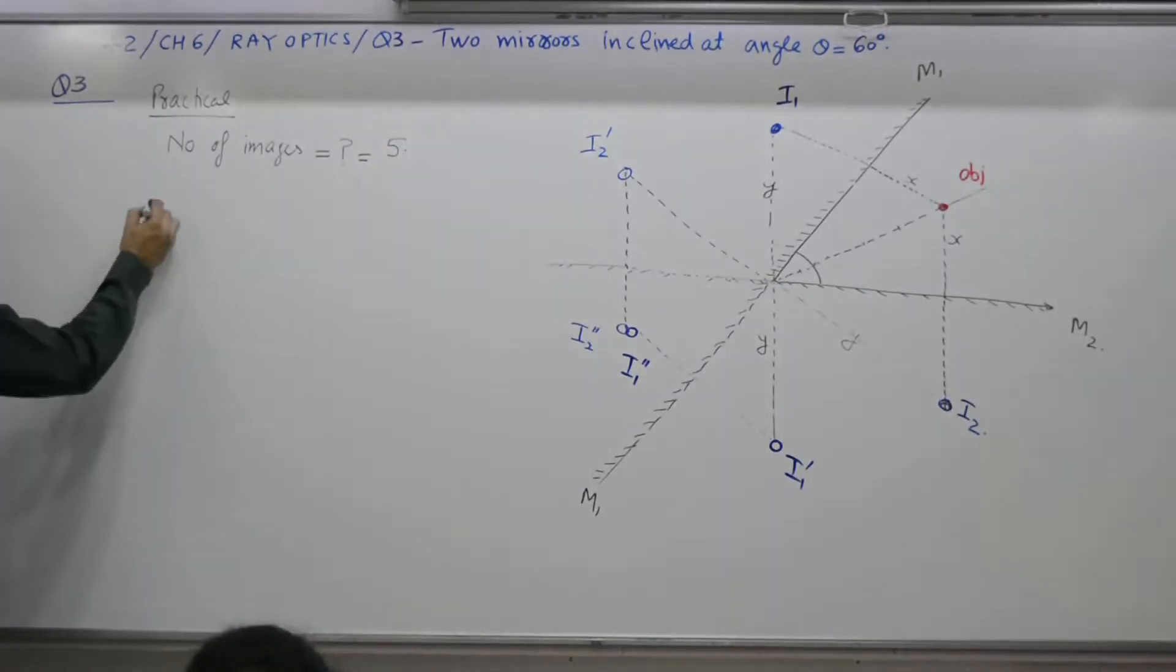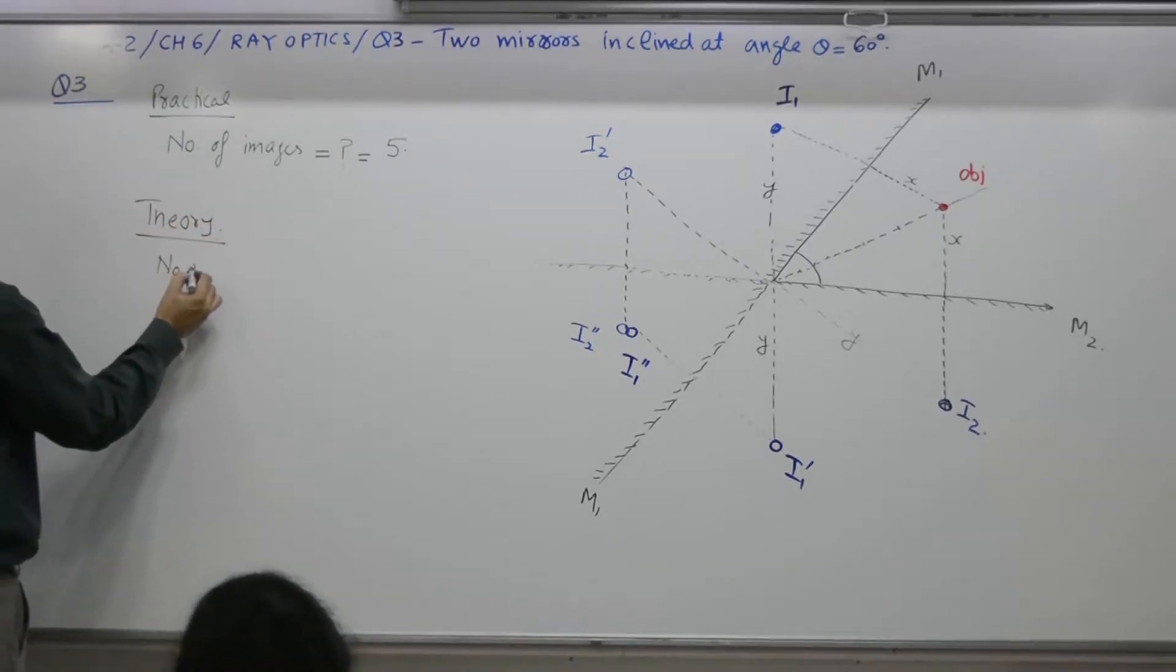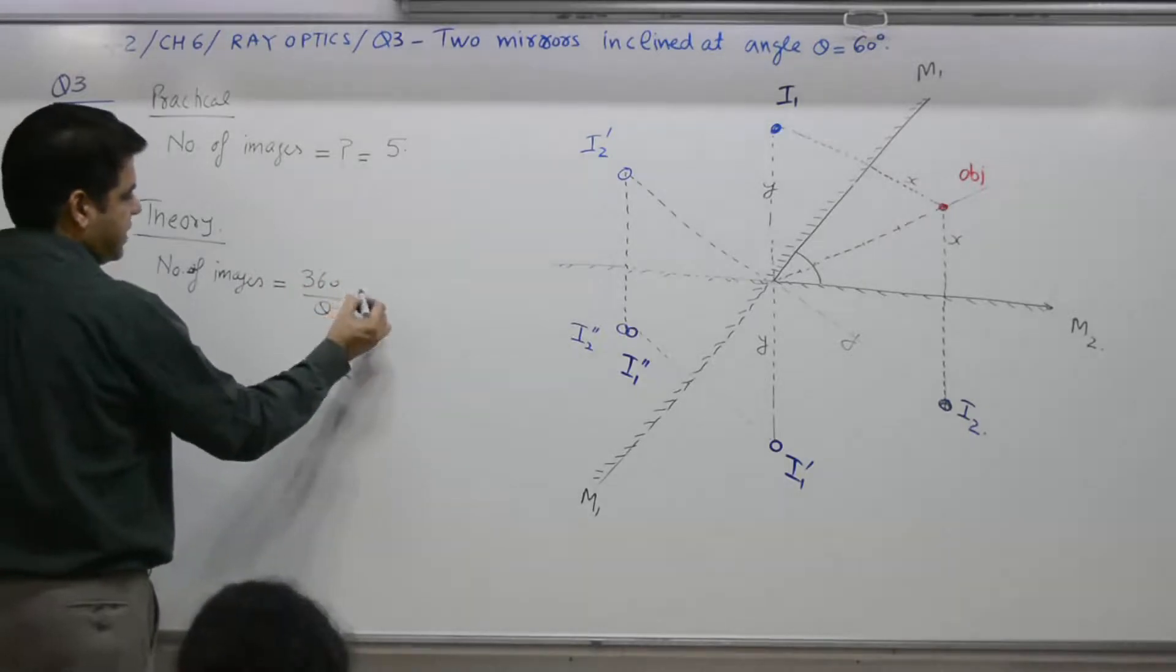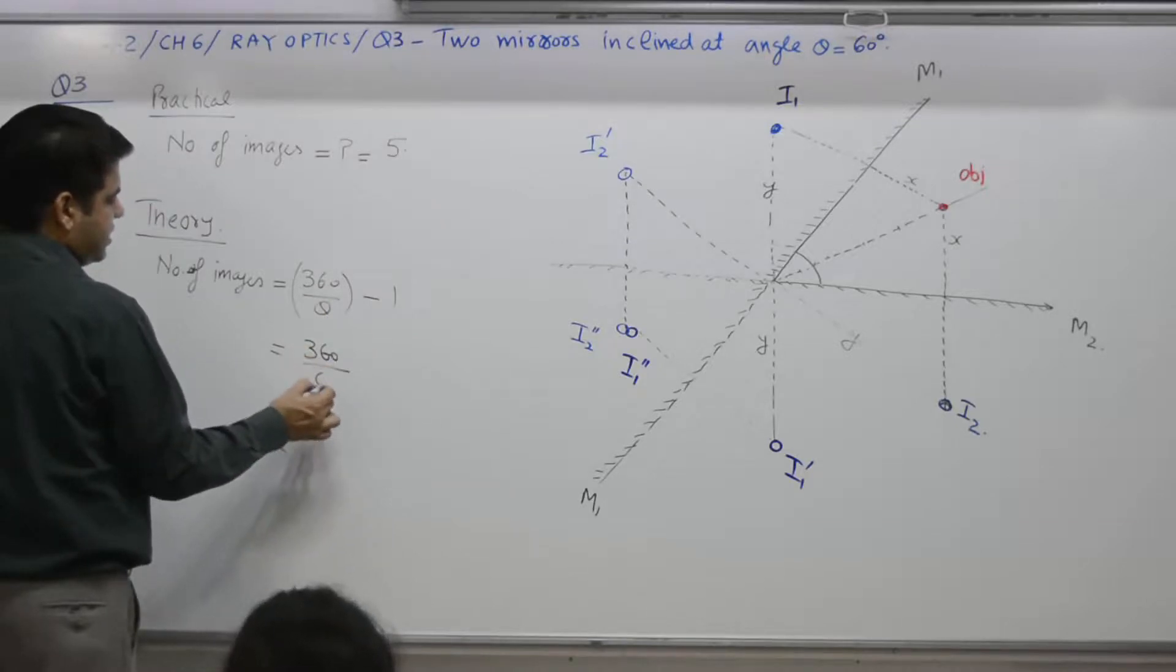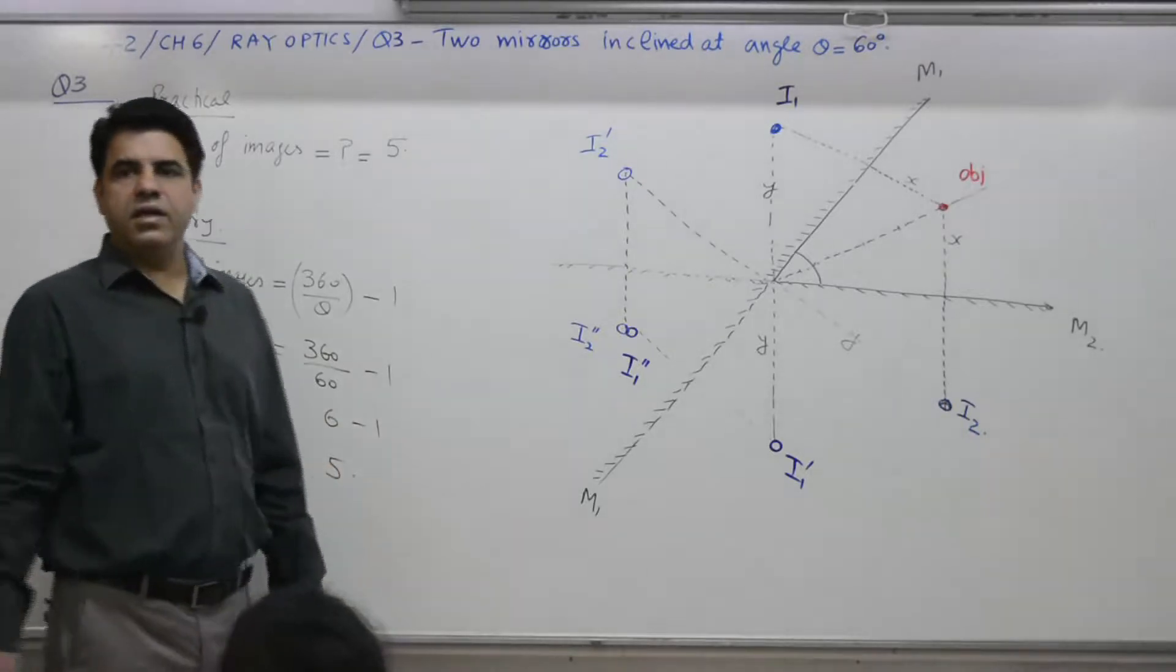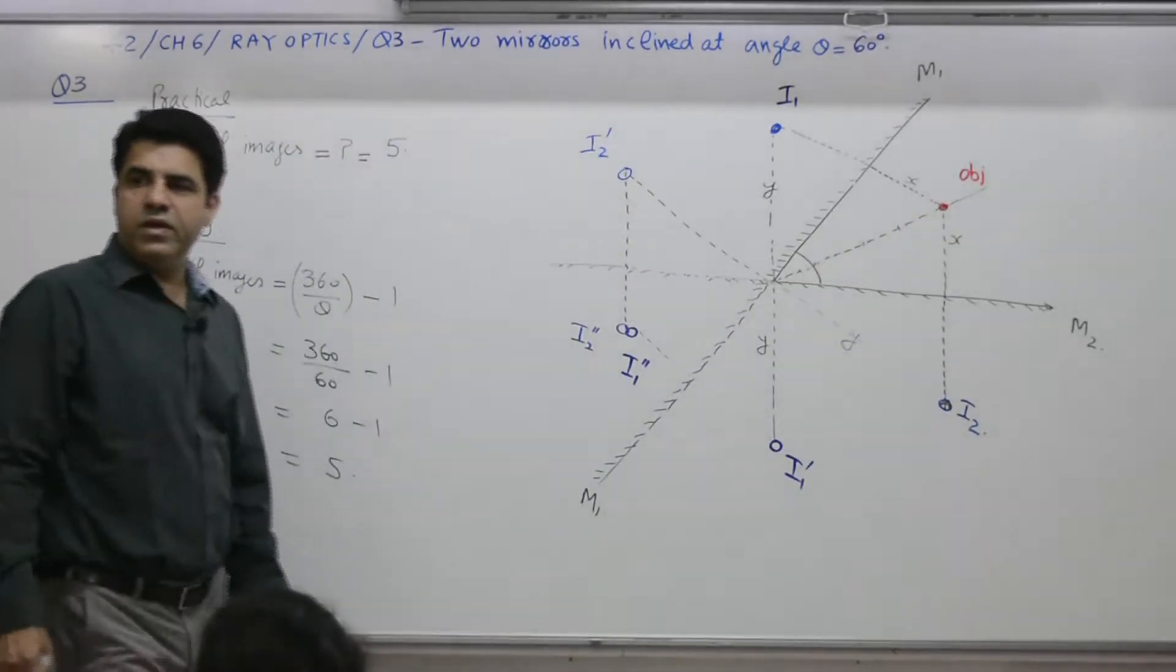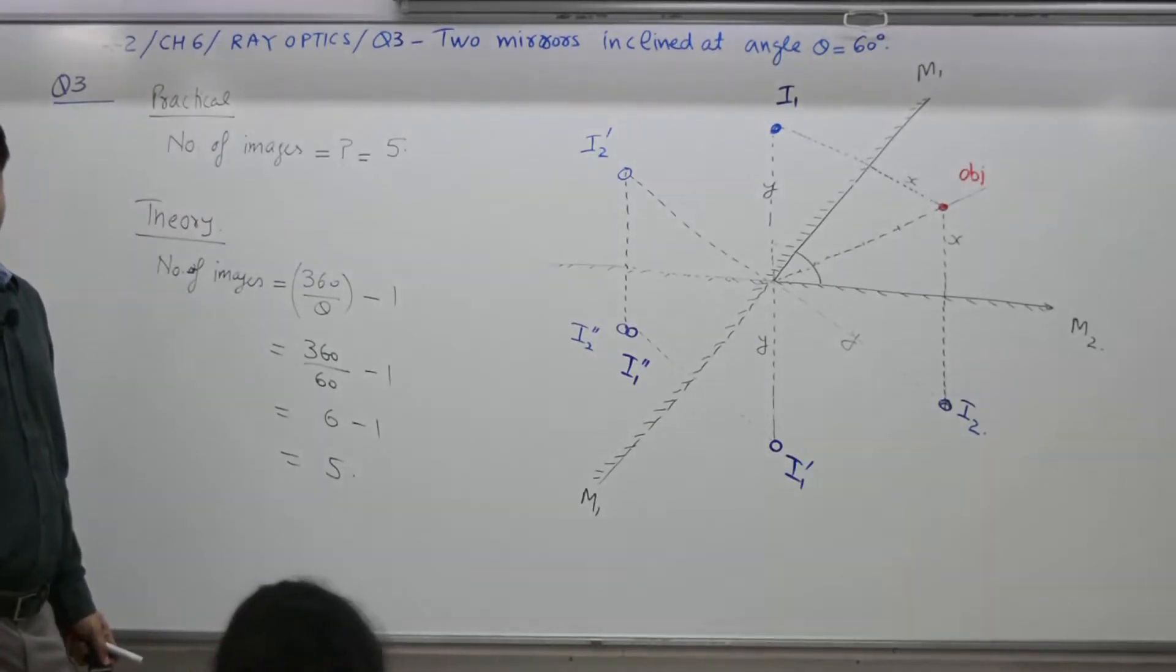Theory. Number of images: 360 by theta. You have to decide the sign minus 1. Why? 360 by 60 minus 1. 6 minus 1 is equal to 5. Why? The last one overlaps. Why it overlaps? Because it is placed symmetrically. All the images. Now what is the correct answer to this? All the images, object and its images.